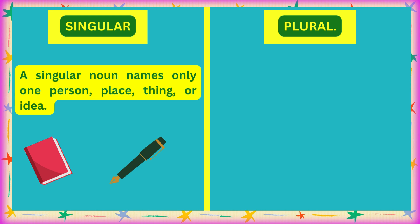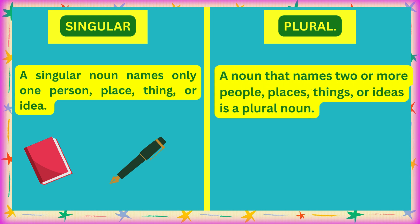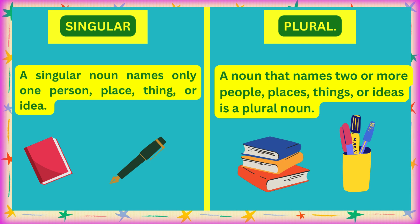Plural क्या होता है? A noun that names two or more people, places, things, or ideas is a plural noun. अब जब हम किसी भी दो चीज की बात करें या दो से ज़्यादा चीज की बात करें, तो उसको हम plural बोलते हैं। जैसे ज़्यादा किताबें हैं, ज़्यादा pens हैं। यह हो गया singular और plural।